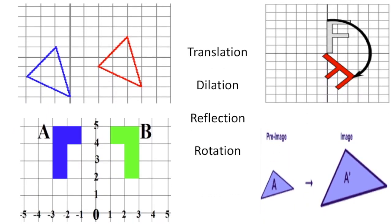On the next page we have four images. Let's figure out which one represents a translation, a dilation, a reflection, and a rotation. The first one shows a blue triangle and a red triangle — the image is just being slid, so this one is a translation.